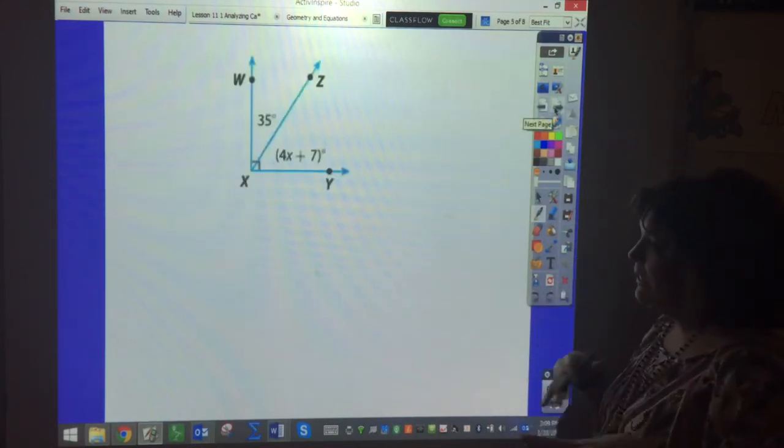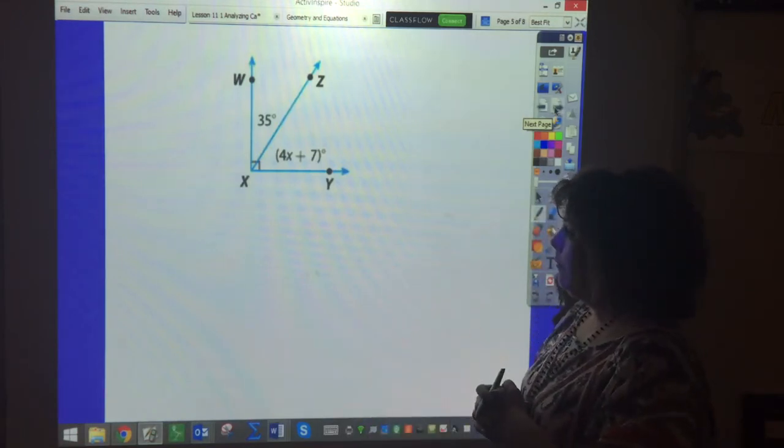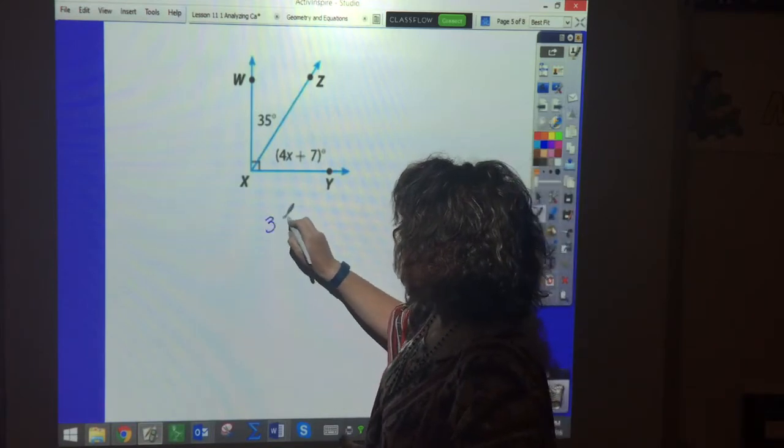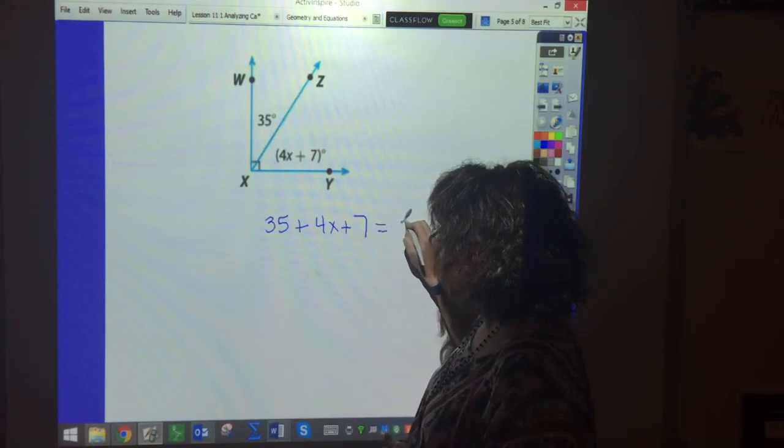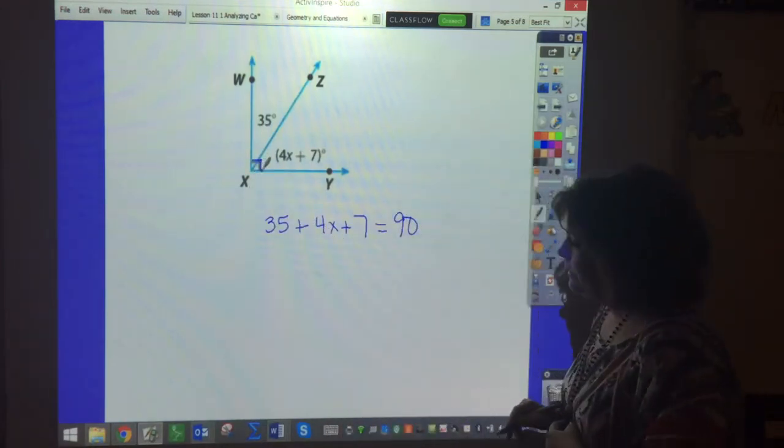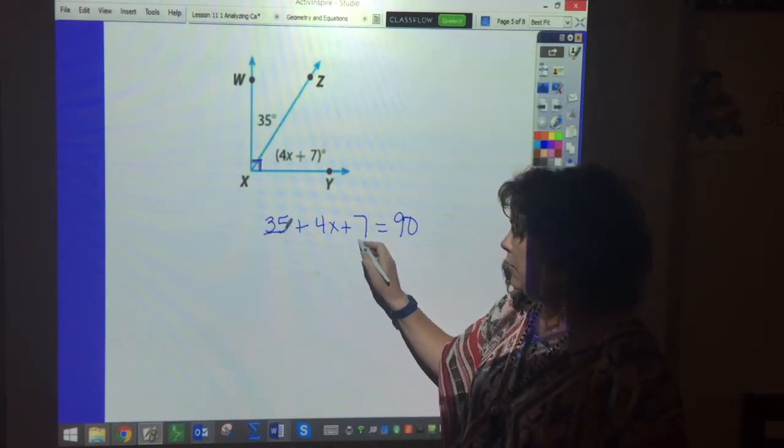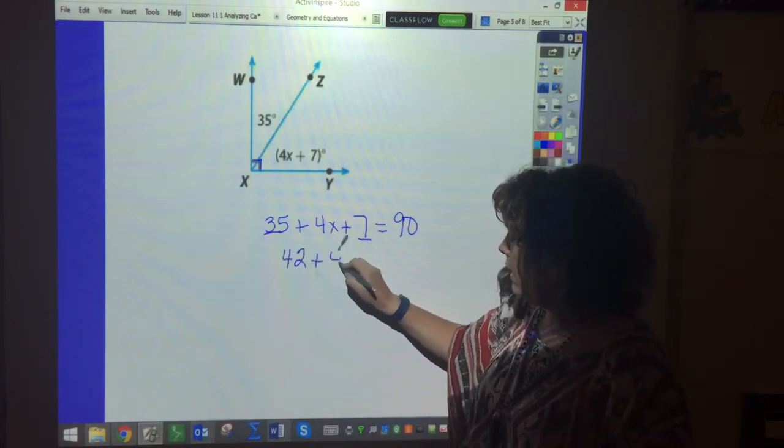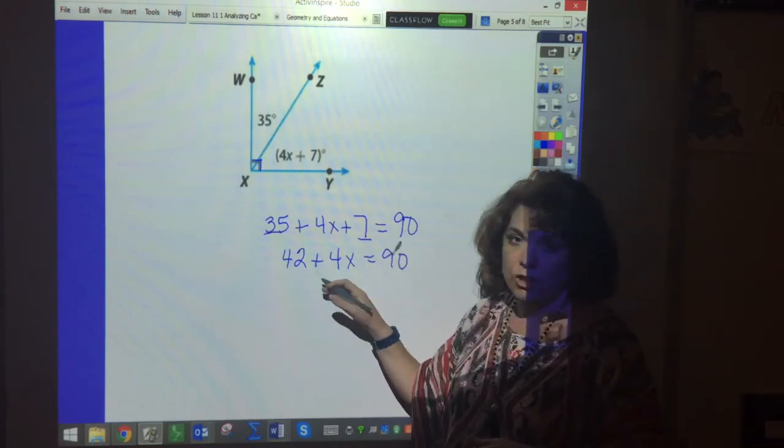So this one, now we get into an algebraic term. This is a two-step problem but the concept is the same. So we're going to take 35 plus 4X plus 7 equals what? 90 because of this right box. And so now I have to combine my like terms. My like terms are 35 and 7. And so that's 42 plus 4X equals 90. I don't have any other X's so it's just 4X.